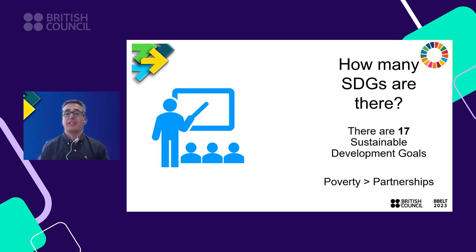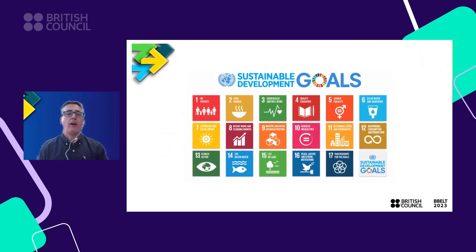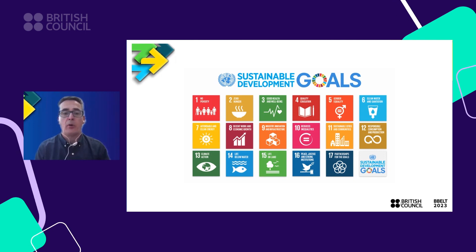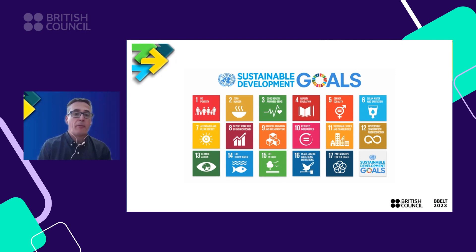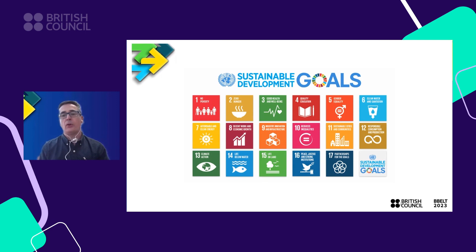How many goals are there? There are 17 sustainable development goals, and they address issues from poverty all the way up to partnerships. Topics include poverty, health and well-being, equality, gender equality, clean water and sanitation, decent work and economic growth, life below water, climate action, as well as peace, justice, and strong institutions.